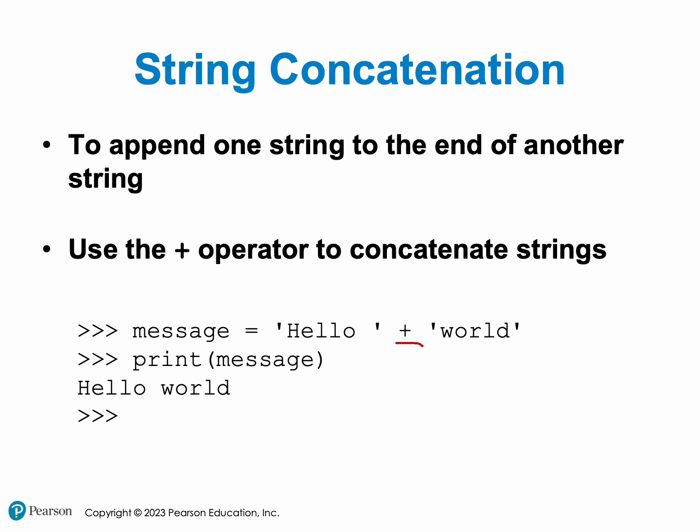In this case we have a variable called 'message' and what we're doing is assigning it to a combination of two strings: 'hello' and 'world'. As you can see, 'hello' is in its own quotation marks, and the word 'world' also has its own pair of quotation marks. Then we're just printing our variable 'message' and we get 'hello world'. This is how you concatenate your strings.